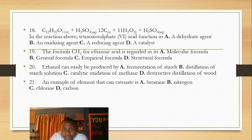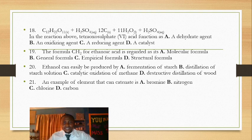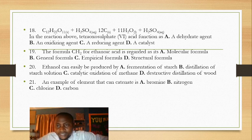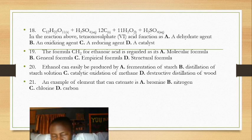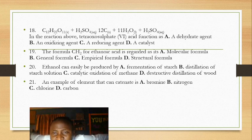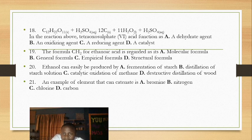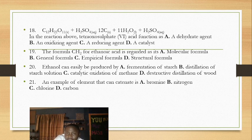Question 19: the formula CH₂O for ethanoic acid is regarded as what type of formula? An alkanoic acid has the general formula CₙH₂ₙ₊₁COOH. The molecular formula for ethanoic acid is CH₃COOH. There are three types of formulas: empirical, molecular, and structural. CH₂O is not the molecular formula, not the structural formula, not the general formula — the nearest answer is empirical formula.